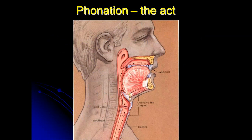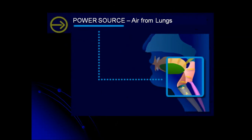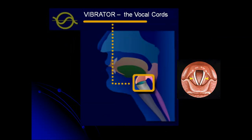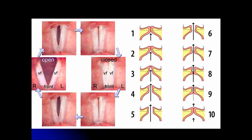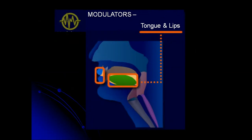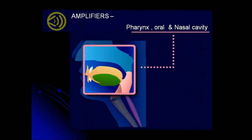Phonation is an interesting function of the larynx. The power source is in the lungs — a lung-powered voice is the better one. Once the power is generated, the vocal cords vibrate, and the intermittent opening and closing of the vocal cords produces sound. This sound is then modulated by the tongue and the lips, and amplified in the pharynx, oral cavity, and nasal cavity. That covers the anatomy and physiology of the larynx.